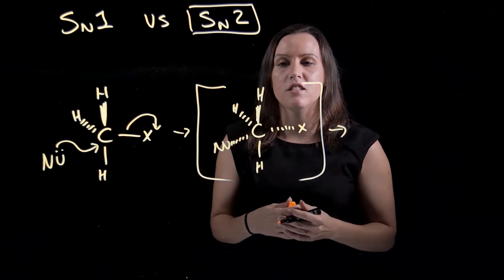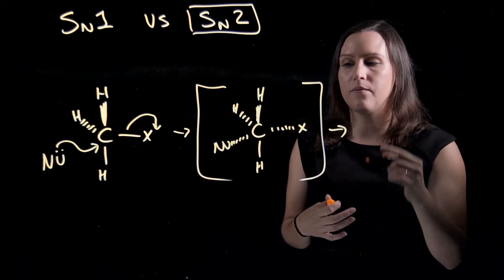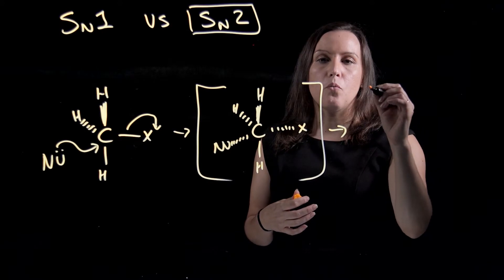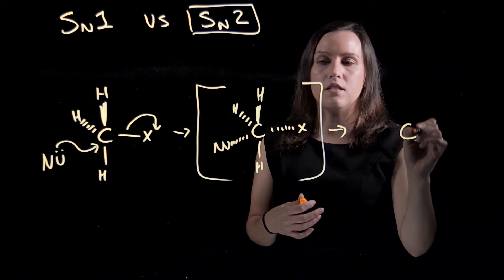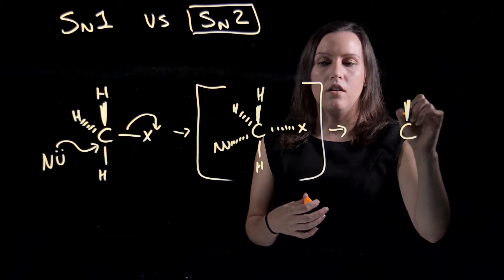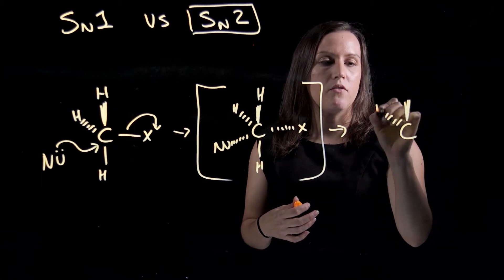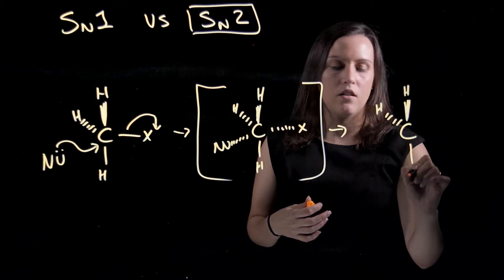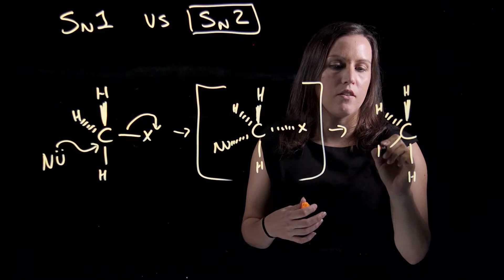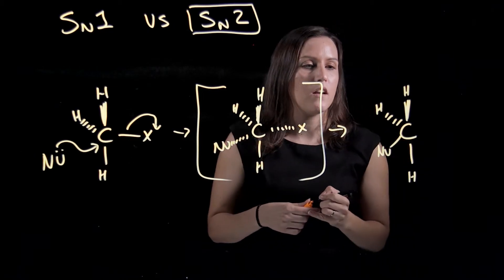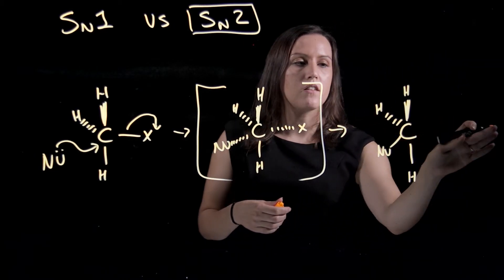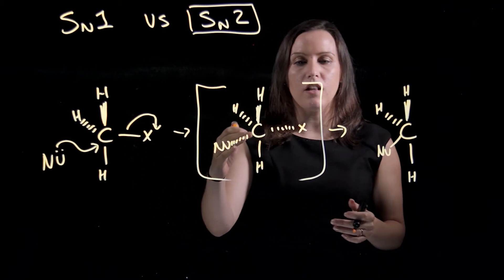Now you can't detect these transition states. They're very quick. So what we have here now is we have our X group has completely left and now our nucleophile is attached. We've had our X completely leaving and our nucleophile come in.